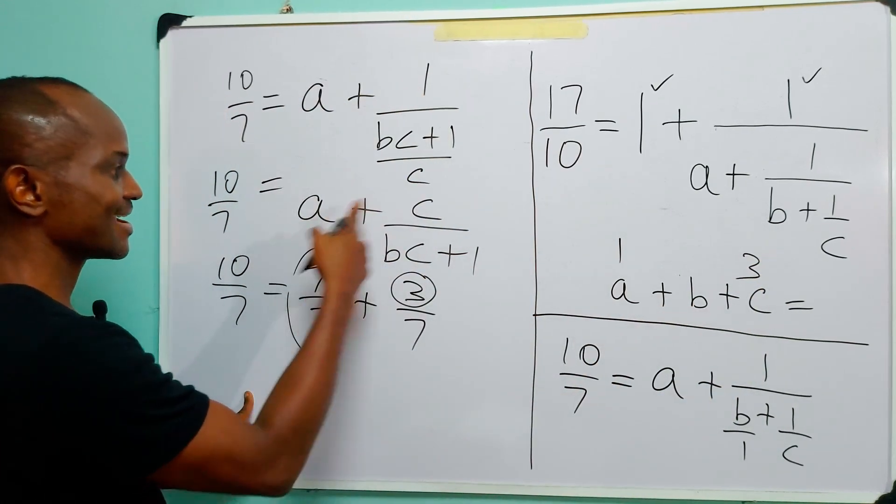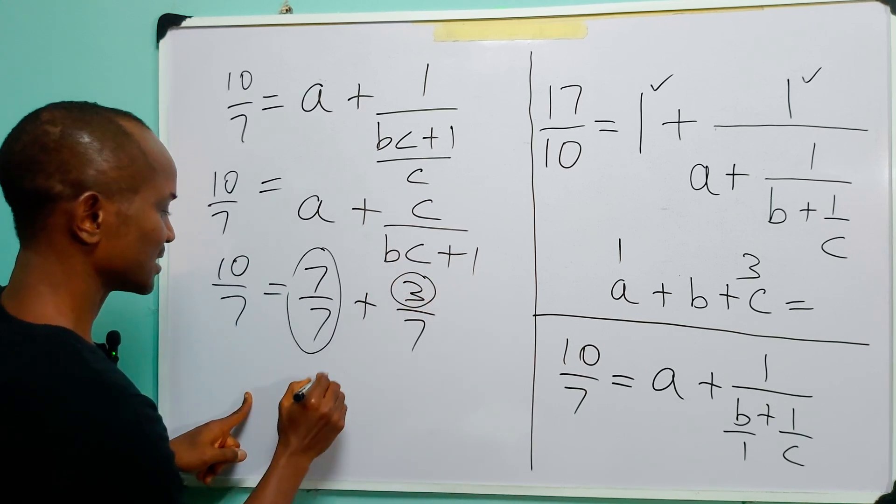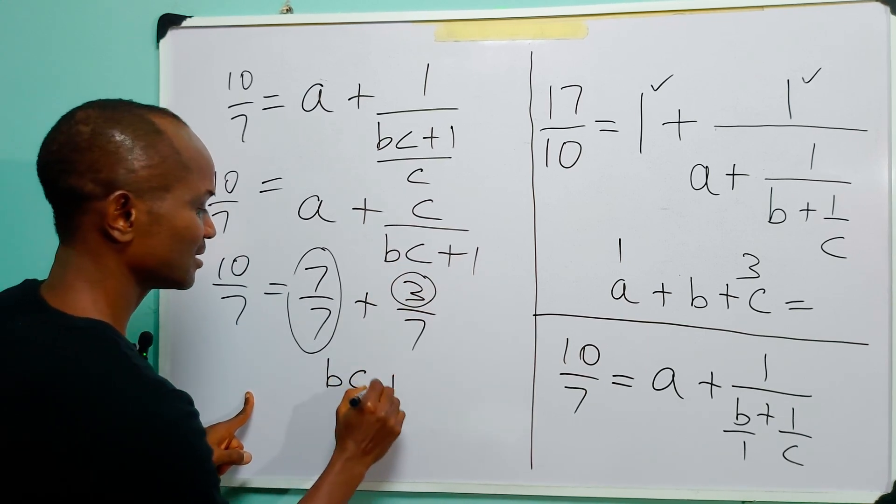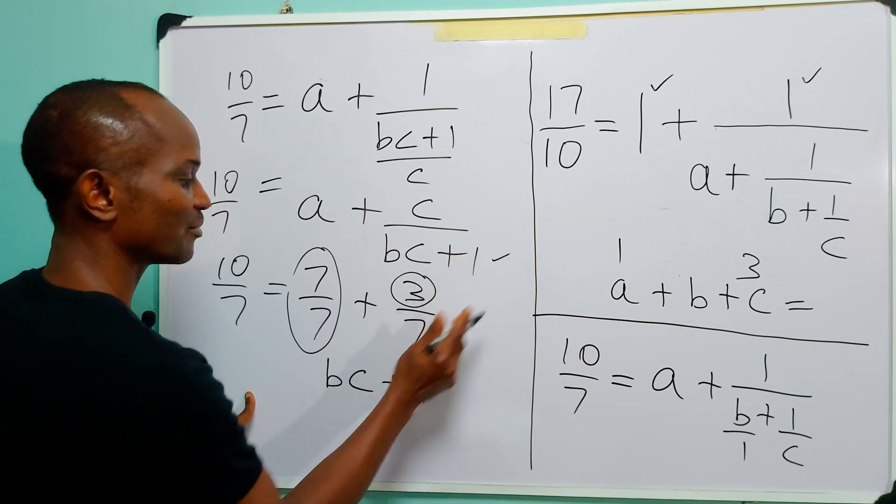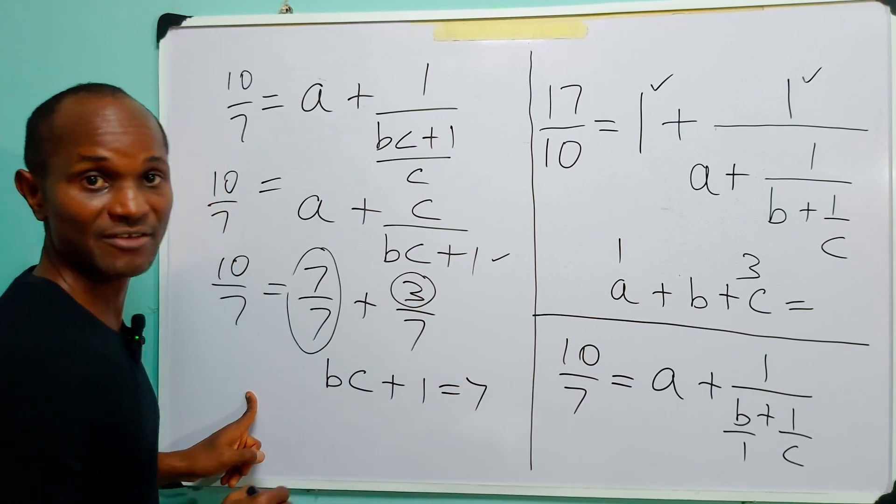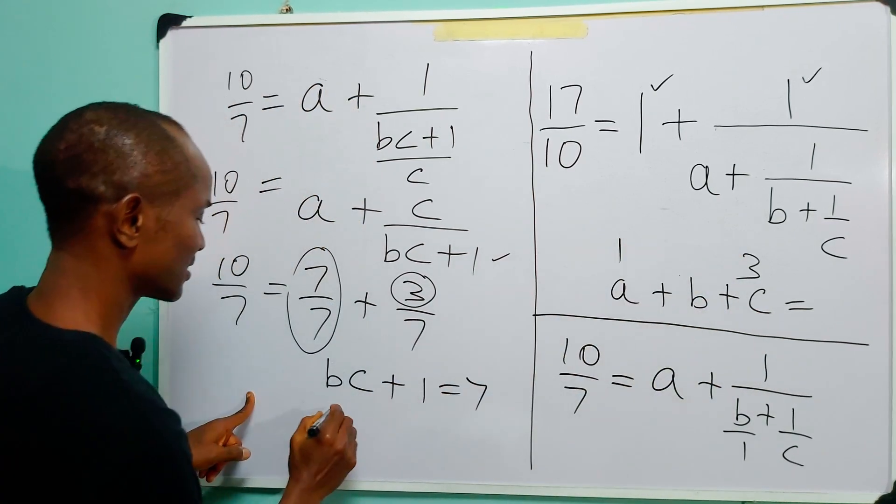Having fixed A and C, what we now have to do is BC plus 1, which is the denominator, must be equal to 7. But we have already fixed C to be 3.